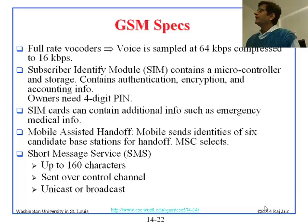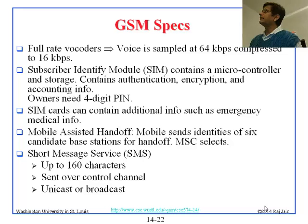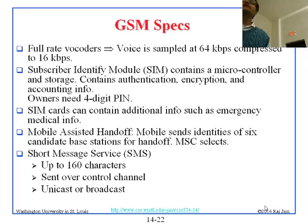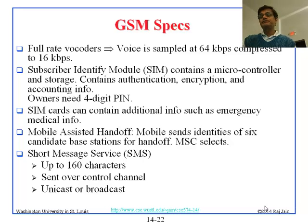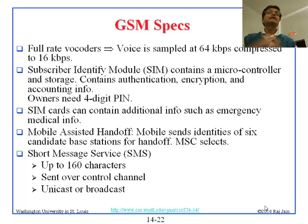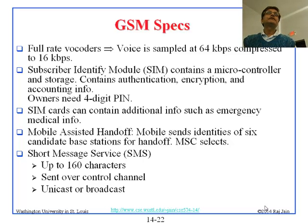The SIM card we talked about, and the mobile-assisted handoff. The mobile basically sends the identities of the six best base stations for handoff. Whenever the mobile is not transmitting — remember the slots — it has some idle time. During that time it can scan and see which towers it can detect. When it finds that the tower it is connected to has lower signal strength than others, it can request to switch to one of those top six.